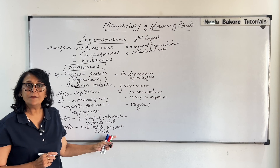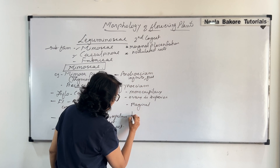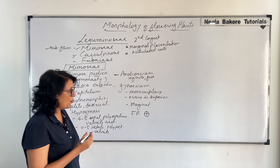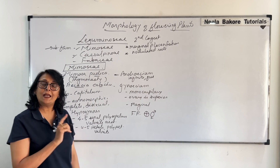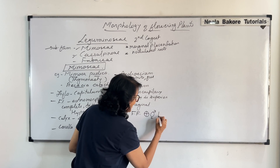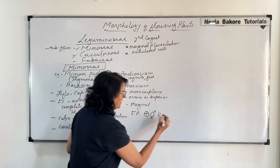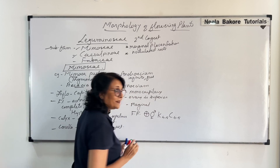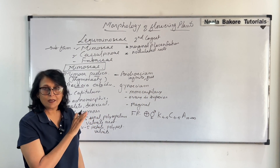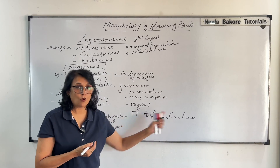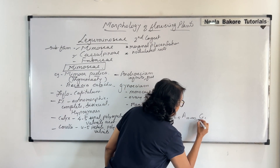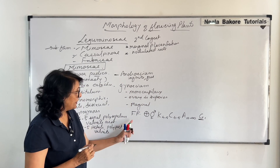From this information we can write down the floral formula of this family. The flower is actinomorphic — this is the symbol for actinomorphic. It is bisexual, meaning both male and female reproductive whorls are present. Calyx: four or five sepals; corolla: four or five petals; androecium: the number varies from 10 to infinite; gynoecium: one monocarpellary with superior ovary, so we put the line just beneath G. This is the floral formula.